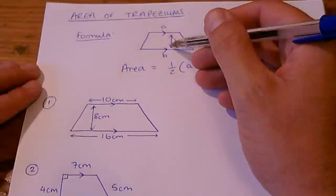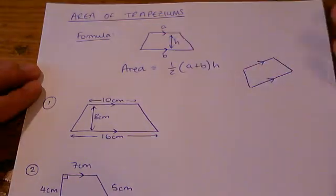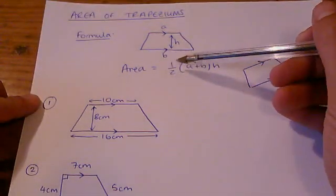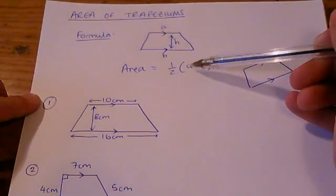The distance between them is measured at right angles, which I'll come back to in a minute. The distance between them is called the height or h.